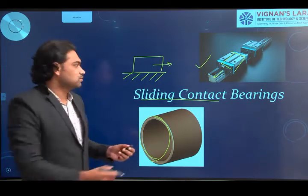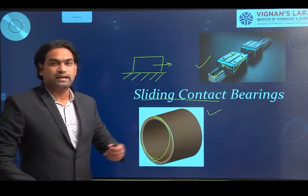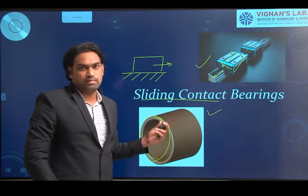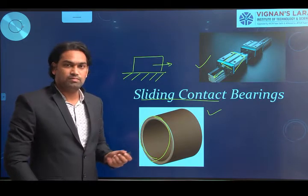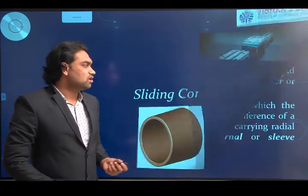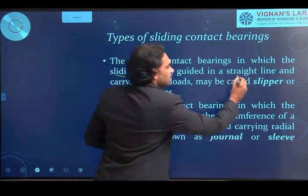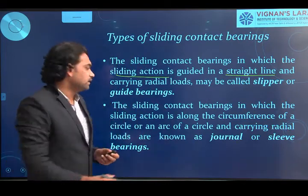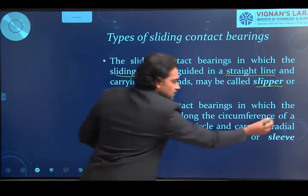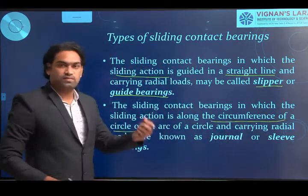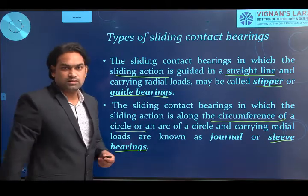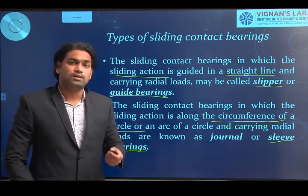So there are two types of sliding contact bearings: if the sliding action takes place in a straight line, we call it slider or slipper bearings; if the sliding action takes place around the circumference, we call it plane bearings or sleeve bearings. If the bearing action takes place around the circumference of a circle or arc of a circle (circumferential sliding motion), those bearings are called sleeve bearings or journal bearings.